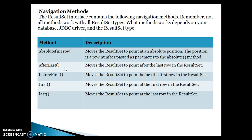Now, afterLast — this moves the pointer of the ResultSet after the last record. So it moves the ResultSet to the point after the last row. Now, beforeFirst — if you call resultSet.beforeFirst(), this is going to move the pointer of the ResultSet before the first record, moving the ResultSet to the point before the first row.